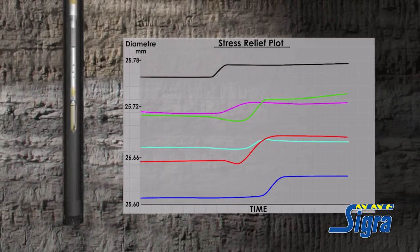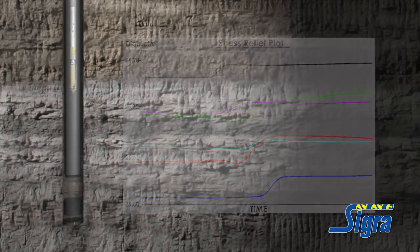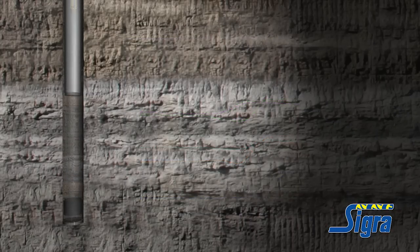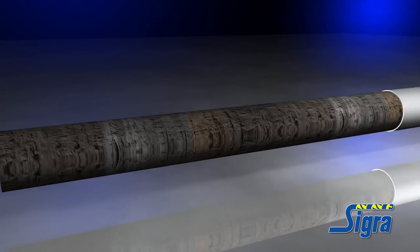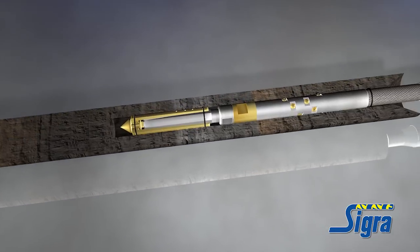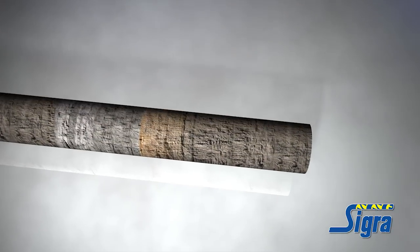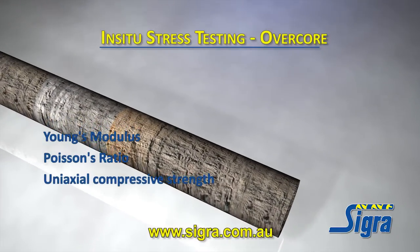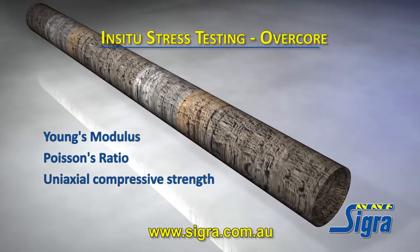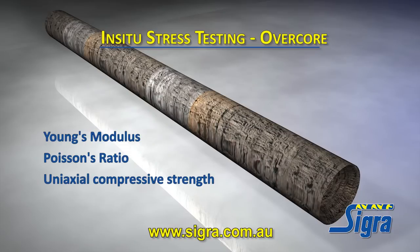At the end of a one metre core run, the core is pulled as normal but with the tool inside. When on the surface the tool and core are photographed and the tool is then extracted from the core. The overcore material is wrapped and sent to the laboratory for the measurement of Young's modulus, Poisson's ratio and uniaxial compressive strength.